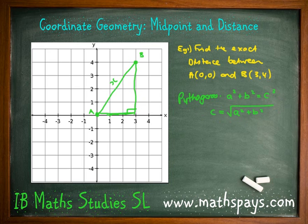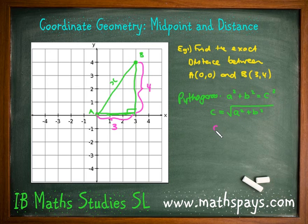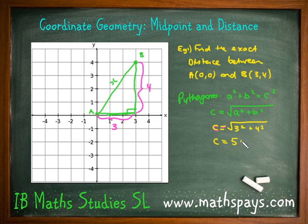So if we look at that, the length of A squared is the distance between 0 and 3, which is 3 units. Our B squared is our height, going from the Y value of 0 up to 4, that's 4. So C equals the square root of 3 squared plus 4 squared. We know that's root 25, which means we have an exact amount of 5 units. That's Pythagoras' theorem.